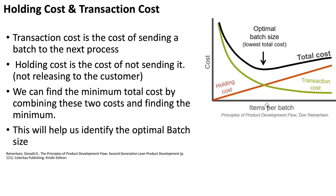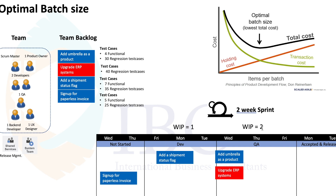Consider the same scenario but with WIP limit set to two. The test engineer no longer processes one story at a time but combines two stories and does regression testing for both together. The flow is enabled and the test engineer is not as burdened — instead of redoing regression tests for each story separately, he handles two together. For example, 30 regression test cases for the first story and 40 for the second, allowing him to optimize his work. The flow is slightly less than the ideal WIP=1 scenario, but this represents the optimal batch size.